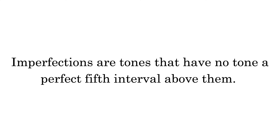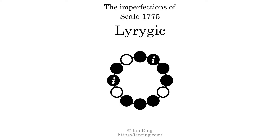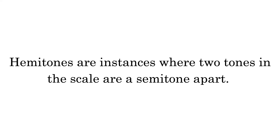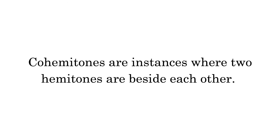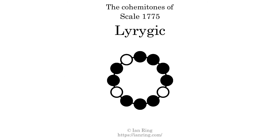Imperfections are tones that have no tone a perfect fifth interval above them. This scale has two imperfections. Hemitones are instances where two tones in the scale are a semitone apart. This scale has six hemitones. Co-hemitones are instances where two hemitones are beside each other. This scale has three co-hemitones.